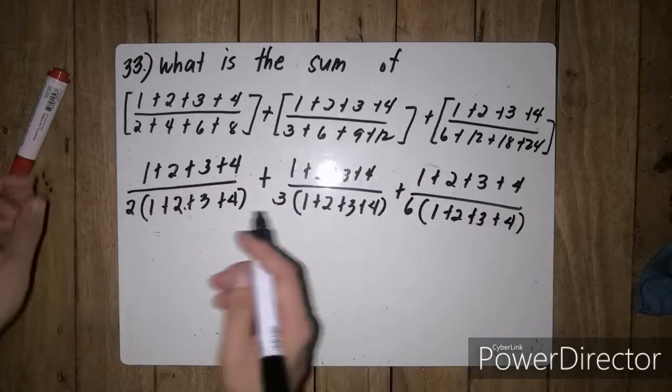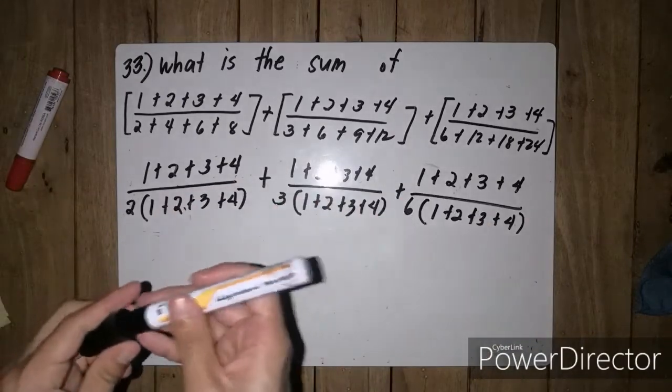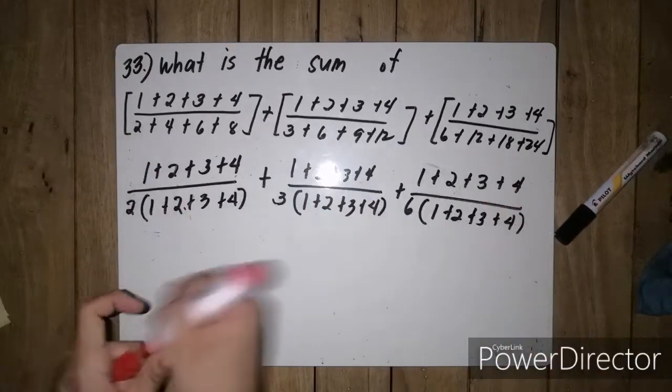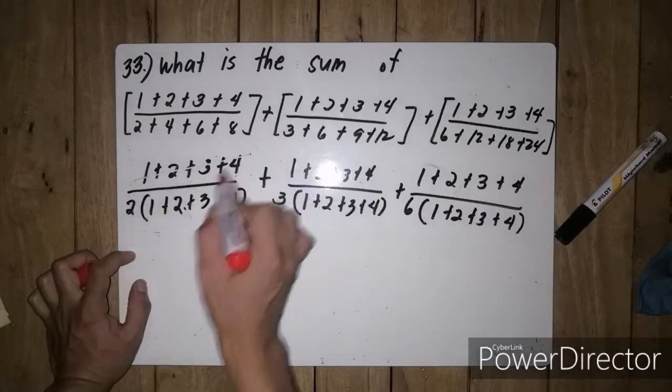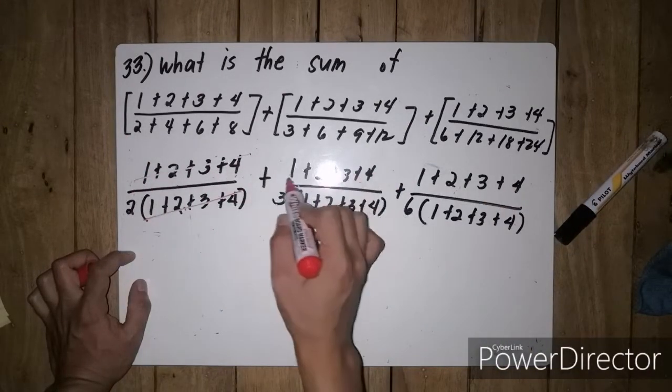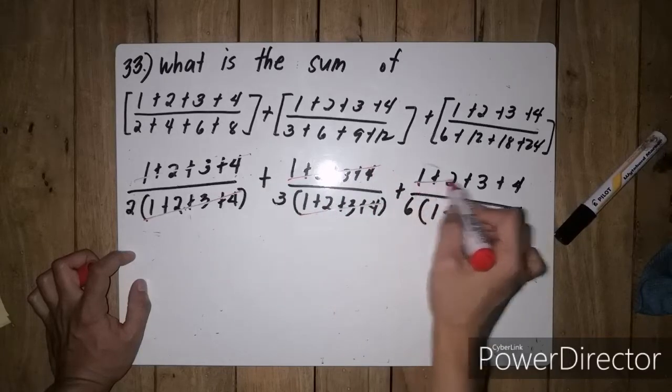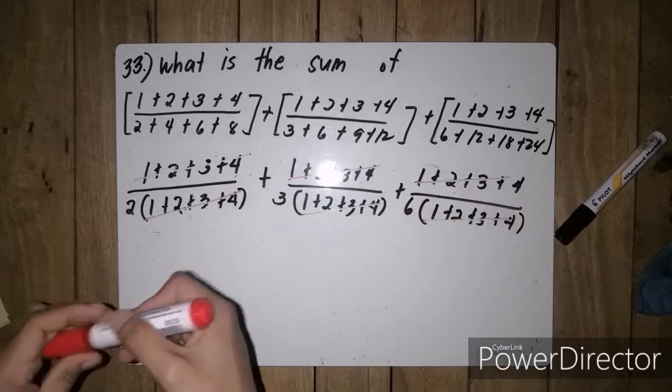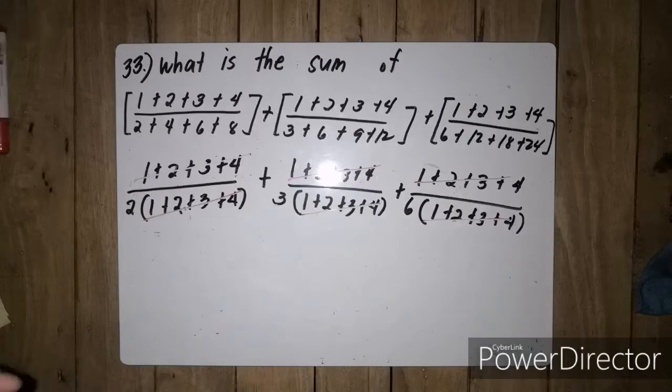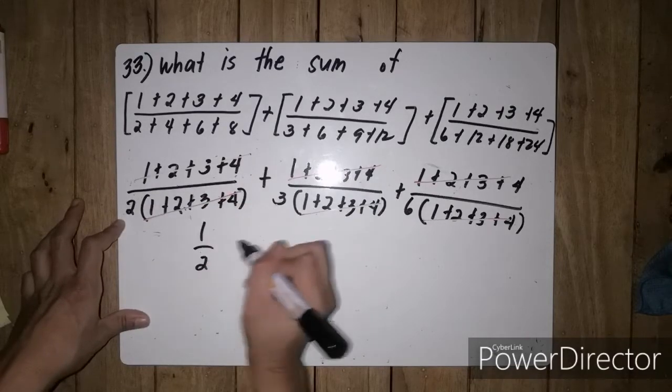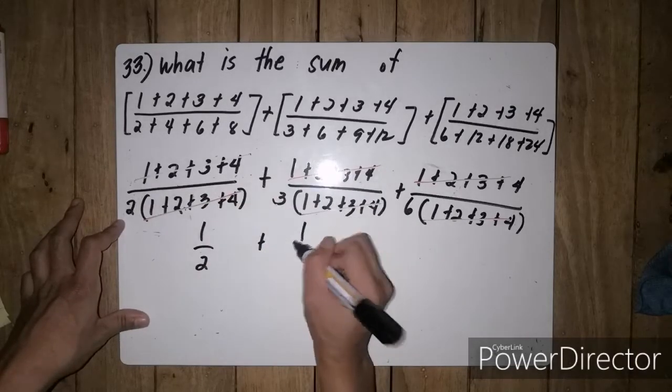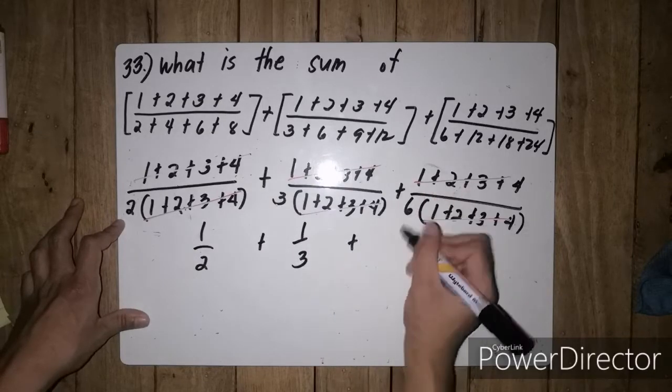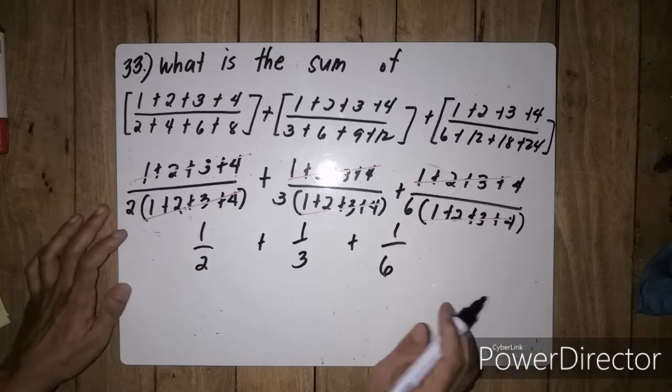If you notice, the numerator and denominator are identical, so we can simplify by canceling them out. What remains is 1 half plus 1 third plus 1 sixth.